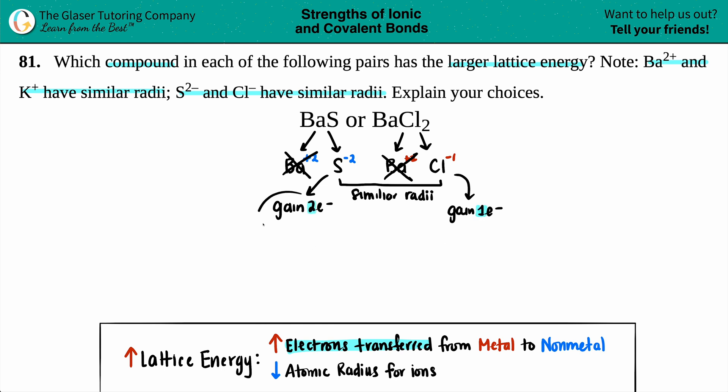So this one gained more—the sulfur gained more. And the more electrons that are transferred, the higher the lattice energy. So in this case, it's a win-win. The sulfur is going to increase the lattice energy, so the compound that would have the higher one is barium sulfide. And that is the end.